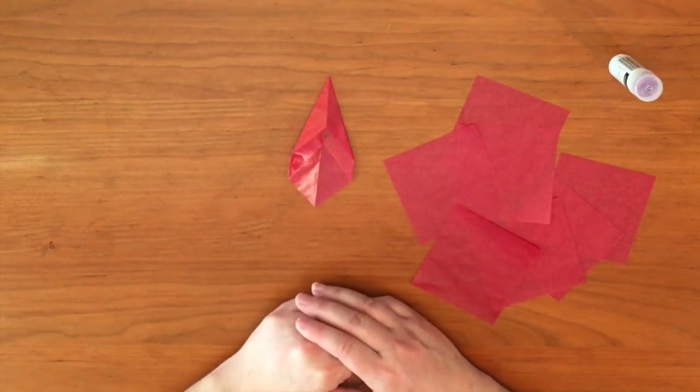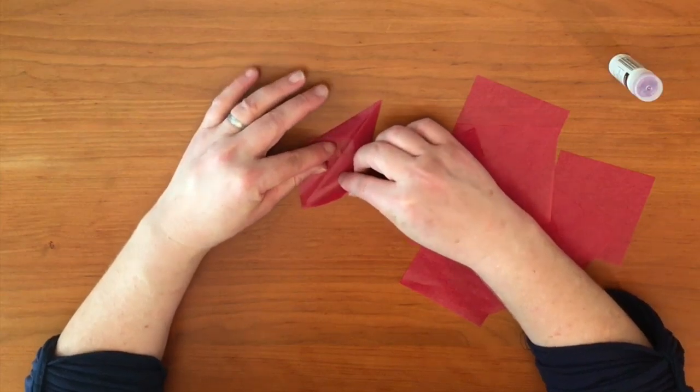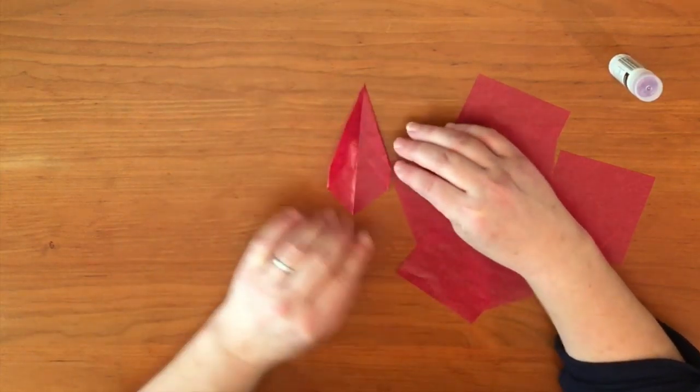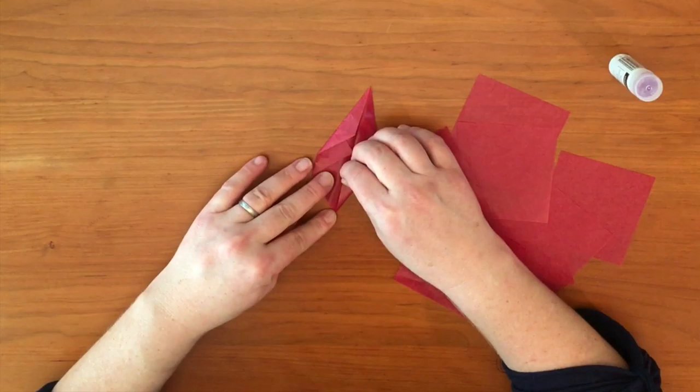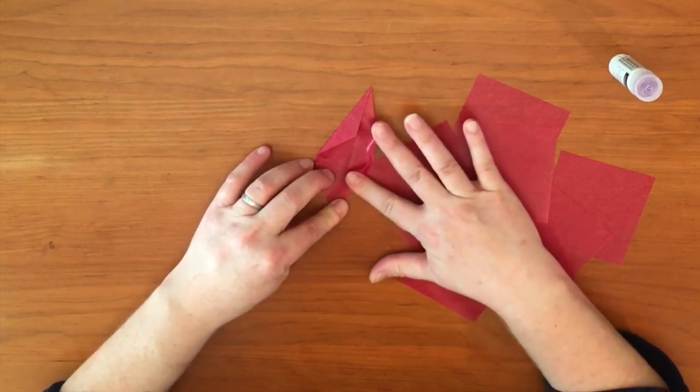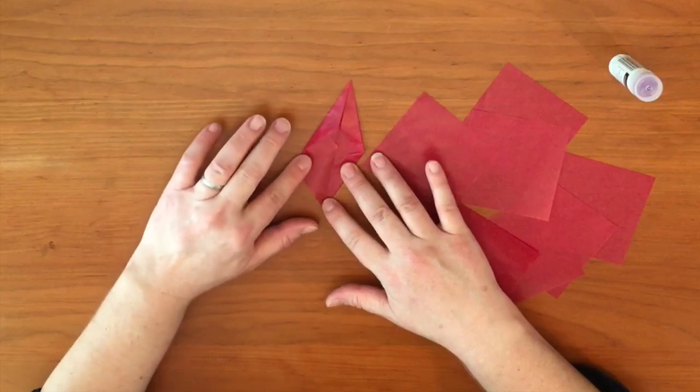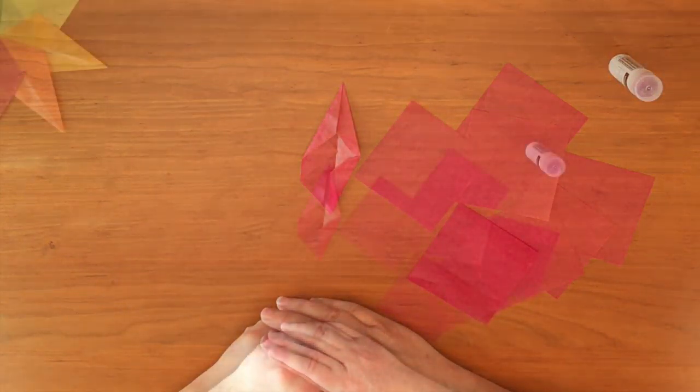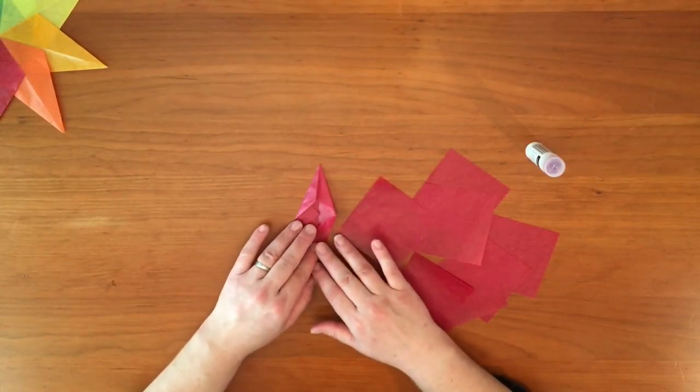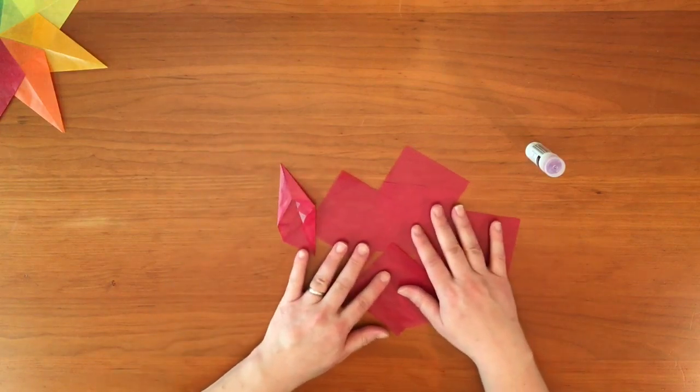If you want to make a pinwheel star, we're going to do this one extra fold where we're going to take the right corner at the bottom here and bring it into the center. We're going to leave the other side unfolded. We're going to create the same folds on the other seven pieces of paper.